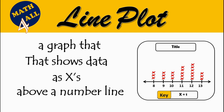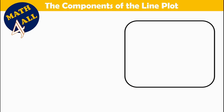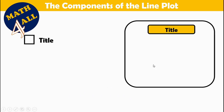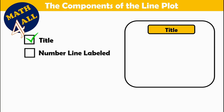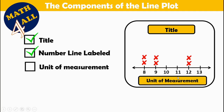Now let's go to the components of the line plot. First, we need a title that tells us what we are talking about. Then we need a number line labeled to show data. Then we need a unit of measurement to explain the numbers — it will tell us if we are measuring lengths like meters or centimeters, or weight, or time.